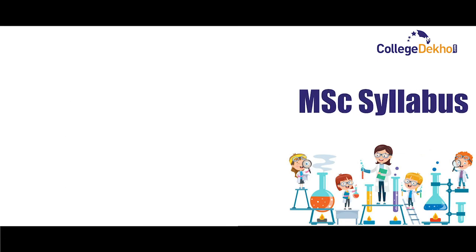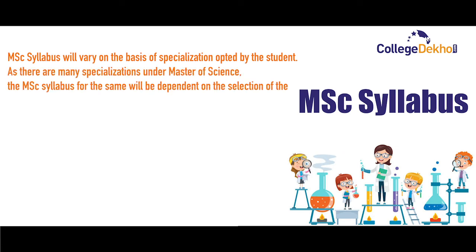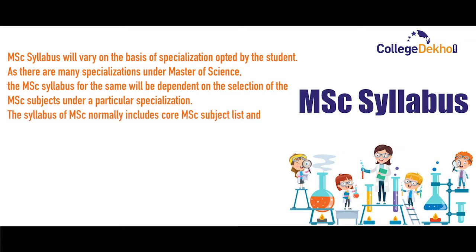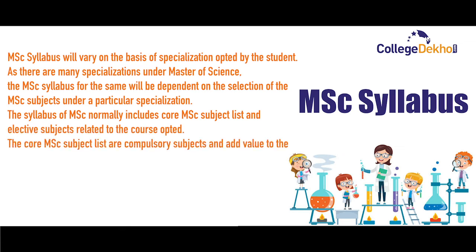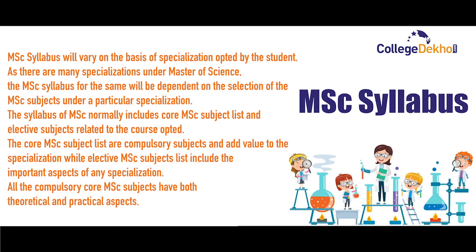Now let's check the MSc syllabus. The MSc syllabus will vary based on the specialization opted by the student. The syllabus for the same will be dependent on the selection of MSc subjects under a particular specialization. The syllabus normally includes core MSc subjects and elective subjects related to the course opted. Core MSc subjects are compulsory and add value to the specialization, while elective MSc subjects cover important aspects of any specialization. All compulsory core MSc subjects have both theoretical and practical aspects.